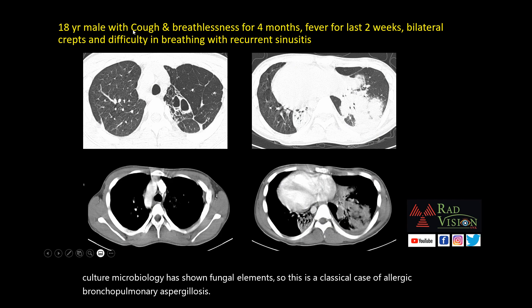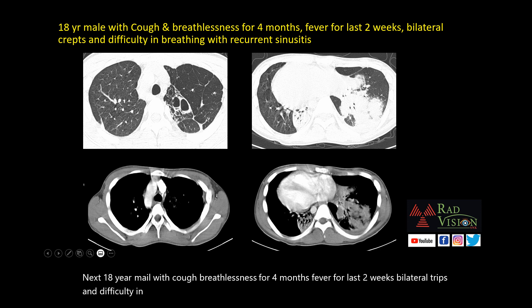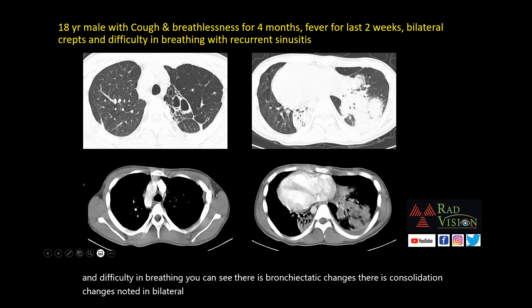Next case: An 18-year-old male with cough, breathlessness for 4 months, fever for the last 2 weeks, bilateral crepitations, and difficulty in breathing. You can see there are bronchiectatic changes. There is consolidation noted in bilateral lower lobes with air bronchograms.